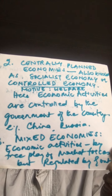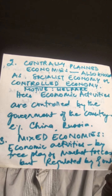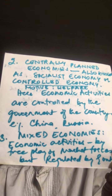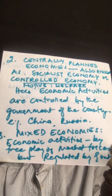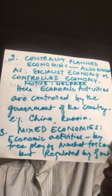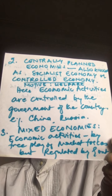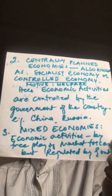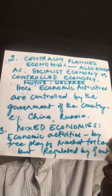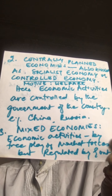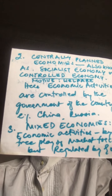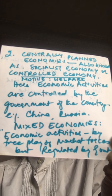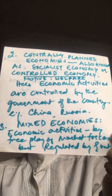In centrally planned economies, we have more of a public distribution system (PDS) and rationing. It is the public sector that dominates economic activity. The consumer is not the king here — social welfare is the priority, and profit motive is absent.